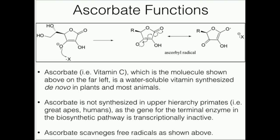A little bit of brief intro on ascorbate. Ascorbate is synthesized by most animals and it's synthesized by plants. However, it is not synthesized by upper hierarchy primates, and that includes humans. It turns out that for every biological molecule there is a biosynthetic pathway, and humans have all the enzymes needed to synthesize ascorbate except for the last one.